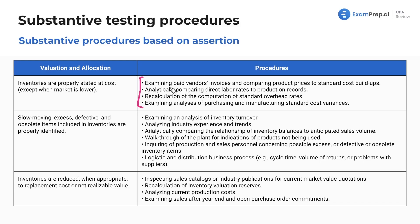We want to examine paid vendors' invoices and compare product prices to standard cost buildups. We're also going to analytically compare direct labor rates to production records, making sure whatever we have on the income statement for direct labor adds up to whatever was produced. We want to recalculate the computation of standard overhead rates and examine analyses of purchasing and manufacturing standard cost variances — looking at variances and analytical procedures, all things that would help here.